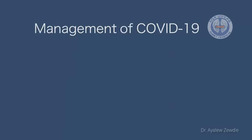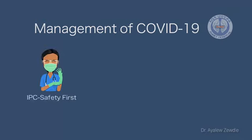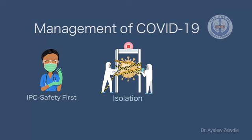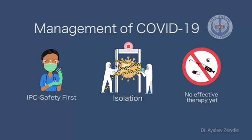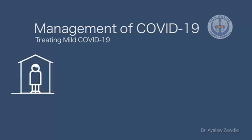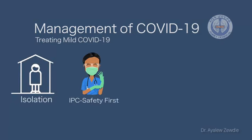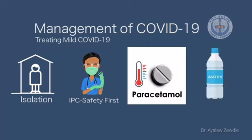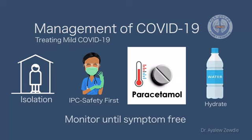For management of COVID-19, the first priority is always safety — infection prevention and control, and patient isolation. There is still no effective therapy, and prevention is better than cure, so we must prevent spread to the community. Treating mild COVID-19 starts with isolation and standard infection prevention. It is mainly supportive: treat fever with antipyretics, encourage self-hydration, and monitor until symptom-free.